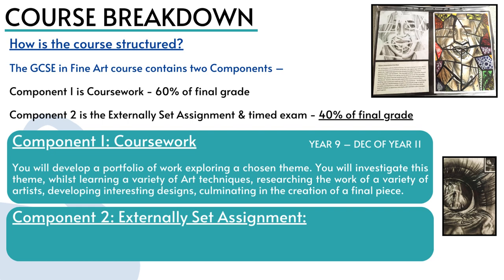The course is broken down into two components. Component one is your coursework and this is worth 60 percent of your overall GCSE grade. Your coursework project will start in year nine and end at Christmas of year 11. You will choose your theme — something you're excited about and want to investigate — and you will take photographs, produce drawings, look at artists who deal with that theme, then experiment with a wide variety of media and design ideas in order to create a final piece.